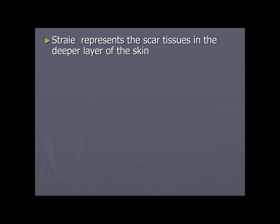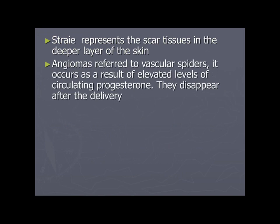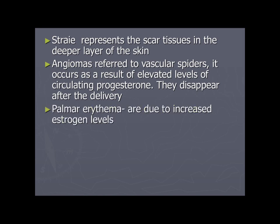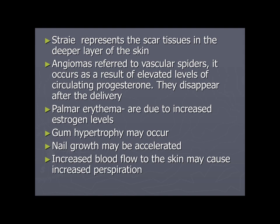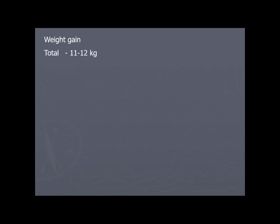Striae represent scar tissue in a deeper layer of the skin. Angiomas (vascular spiders) occur as a result of elevated circulating estrogen and disappear after delivery. Palmar erythema is due to increased estrogen levels. Gum hypertrophy may occur, nail growth may be accelerated, and increased blood flow to the skin may cause increased perspiration.